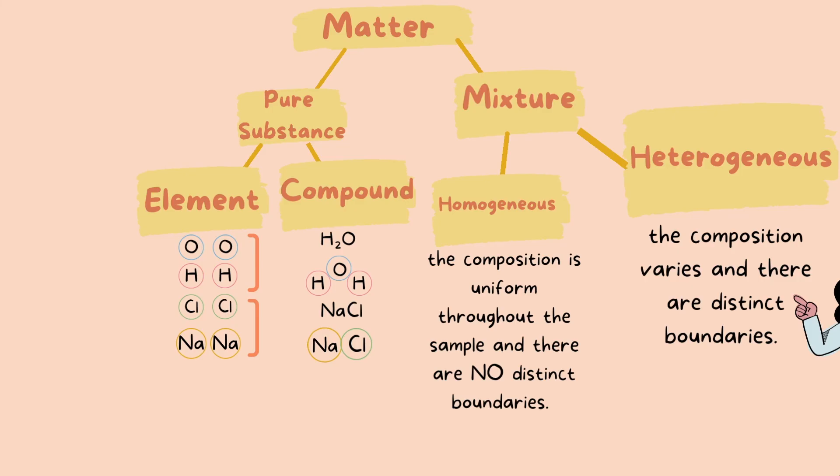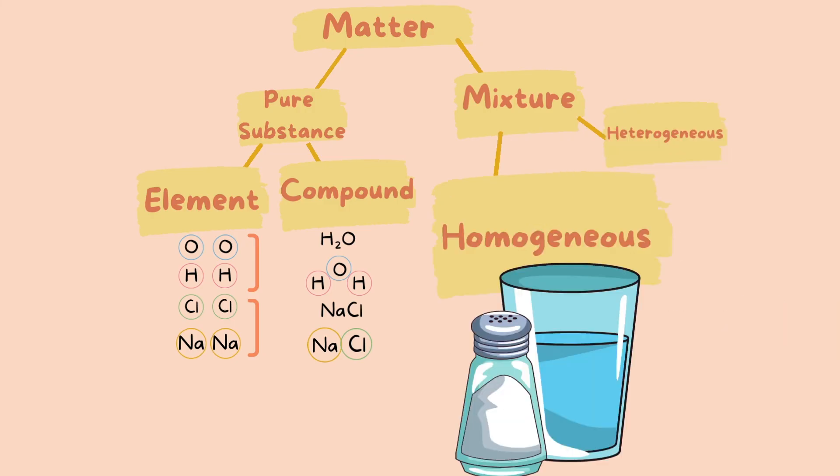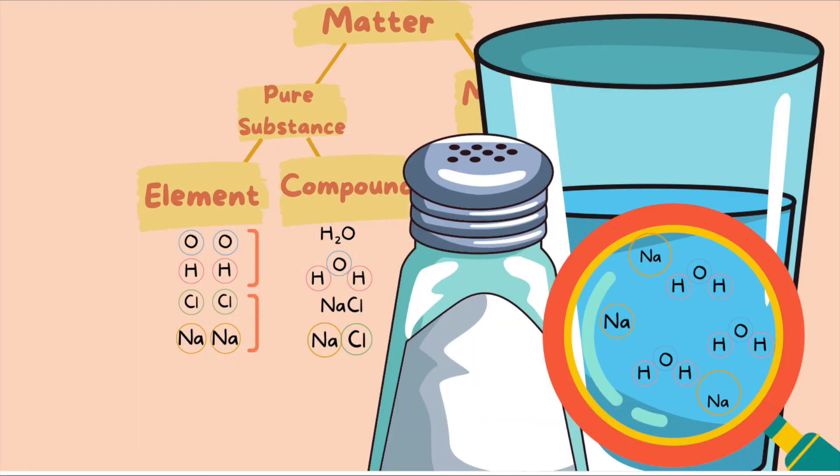An example of a homogeneous mixture is salt water. If we mix salt and water in a cup, the substances blend in together so we see a uniform composition and there is no clear boundary line between salt and water. But if we take a magnified look, we can clearly see salt molecules and water molecules separate.